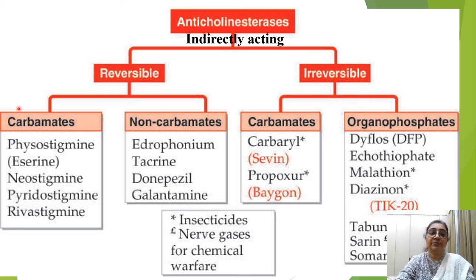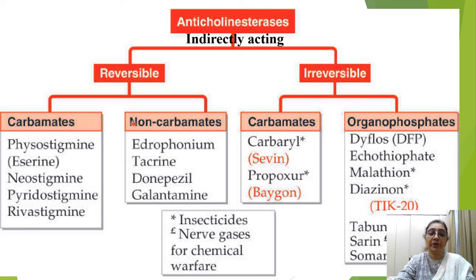The reversible group is subdivided into carbamates — physostigmine, neostigmine, pyridostigmine, and rivastigmine (mnemonic: PNPR) — and non-carbamate drugs: edrophonium, tacrine, donepezil, and galantamine.